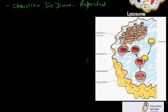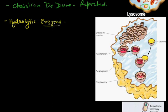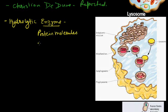This cell organelle is present in plant cells as well as animal cells. It has specific enzymes inside it called hydrolytic enzymes. Enzymes are protein molecules responsible for the breakdown of molecules or for increasing the rate of reaction in the cell. So we also call them biocatalysts, because they are present in cells and are made up of proteins.